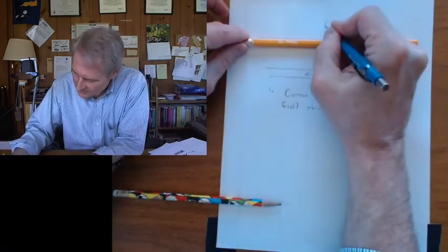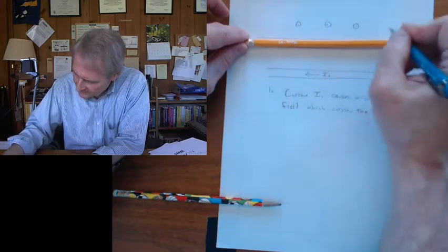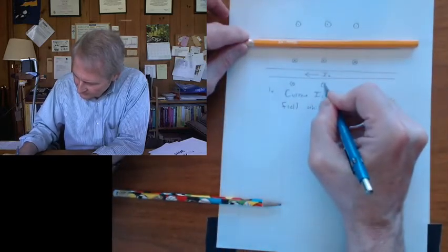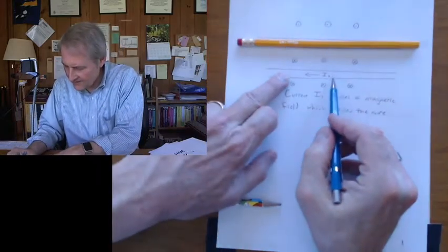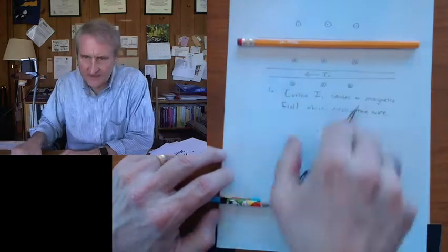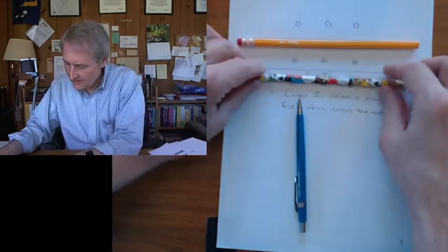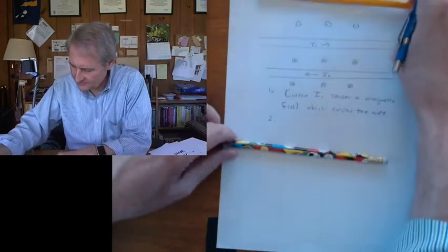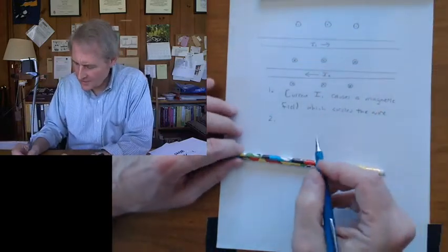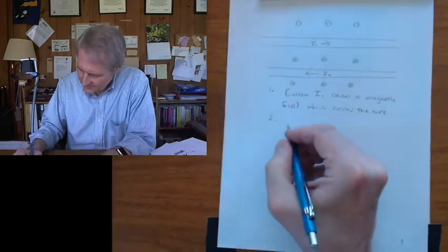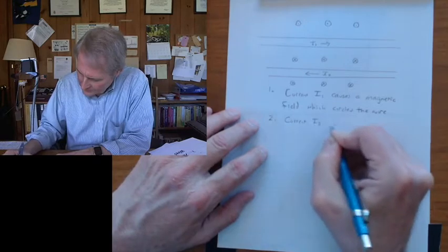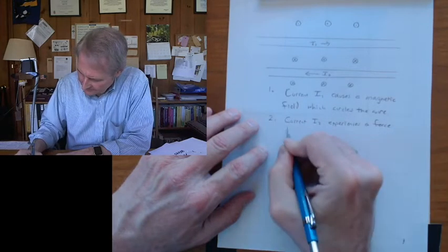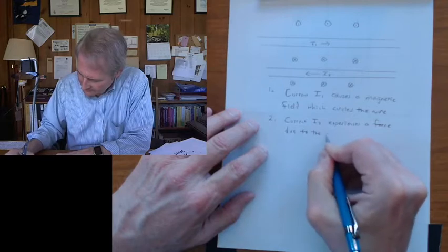And so here it's coming out of the page up above. And here it's going into the page. And it's getting weaker the farther away it is, but it's going into the page. And you can see for this wire, there is a magnetic field going down into the page. And now we use the second right-hand rule because now the current I2 in the bottom wire feels a force due to a magnetic field. That's a separate rule. So the current I2 experiences a force due to the magnetic field.